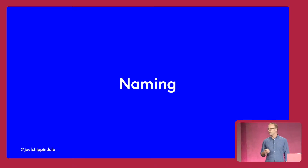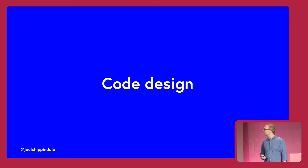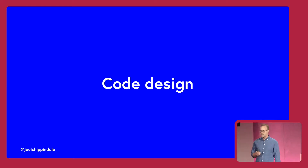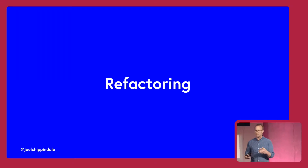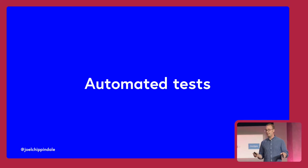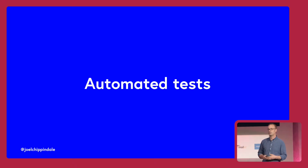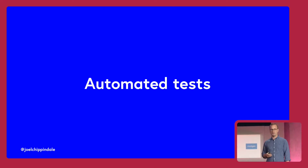We think a lot about naming of methods and functions and variables. We think about our code design. And we probably, in our teams, spend a lot of time refactoring code — taking code that works and making it simpler to understand. And probably most of your teams are spending a significant proportion of their time writing automated tests. That allows your teams to have the confidence to keep changing the software, but it also helps document what the code is supposed to do.